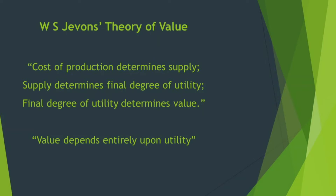He rejected the classical theory of value, that is the labor theory of value, by arguing that the labor spent on production of a commodity is gone and lost forever. However, he could not reject outright the influence of labor in value determination. He agreed that labor indirectly influenced value by varying the supply.